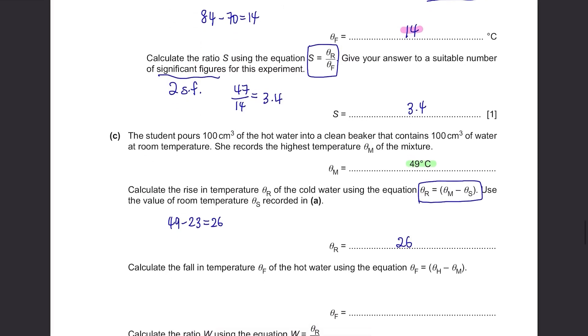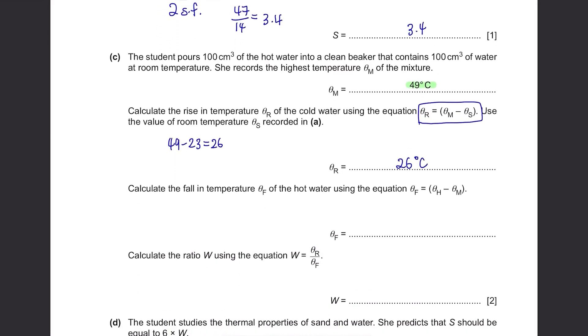Calculate the fall in temperature theta-f of the hot water using the equation theta-f equals theta-h minus theta-m. Theta-h was 84 and theta-m was 49, so it's 35. Calculate the ratio w using the equation w equals theta-r over theta-f. 26 divided by 35 is 0.74 rounded to 2 significant figures.